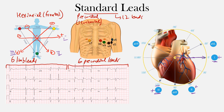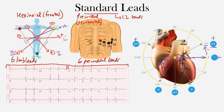We said we have augmented leads sitting almost between them. Notice they're all spaced out at least 30 degrees apart. AVL will come in here with its positive end at negative 30 degrees — going this way is positive, and the other way is negative. AVF is down here at positive 90 degrees. And AVR sits here at negative 150 degrees. So we have six limb leads and they're all 30 degrees apart.